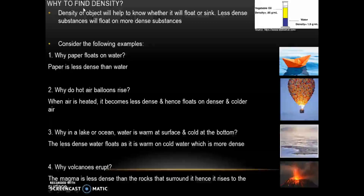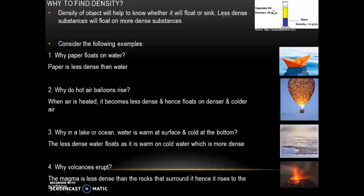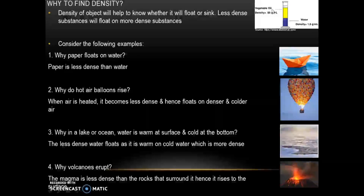In this slide also, we will check out why to find density. Density of an object will help us know whether it will float or sink. Less dense substances will float on more dense substances. For example, consider a jar with two liquids: vegetable oil having density equal to 0.95 gram per milliliter, and water at the bottom having density equal to 1 gram per milliliter. Since density of oil is less compared to density of water, it will definitely float on water.